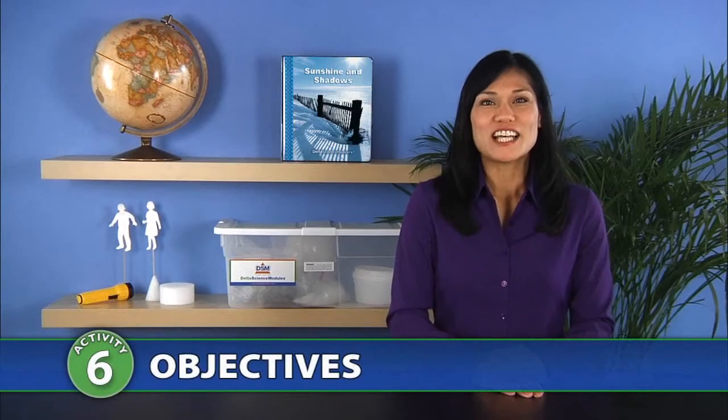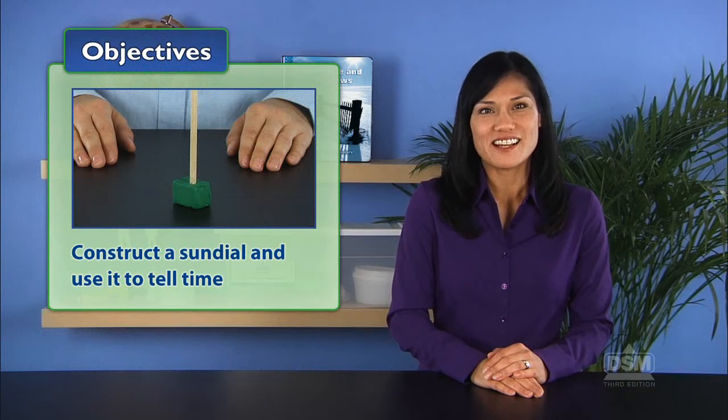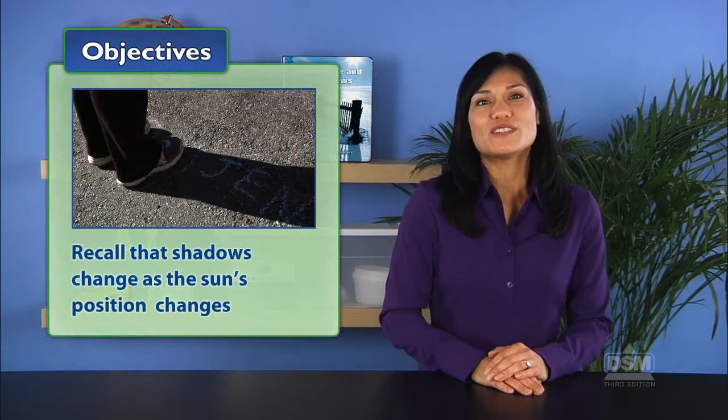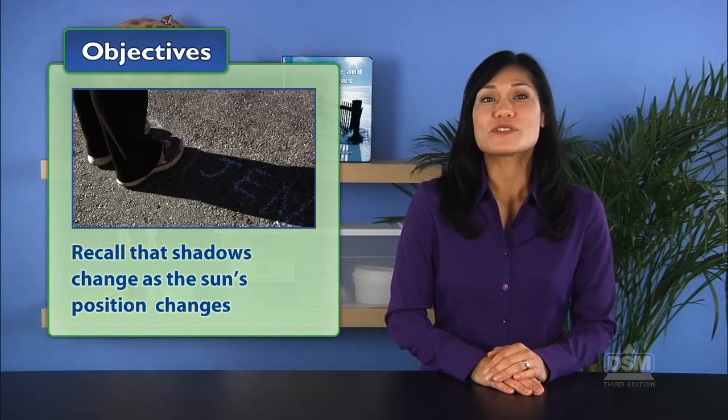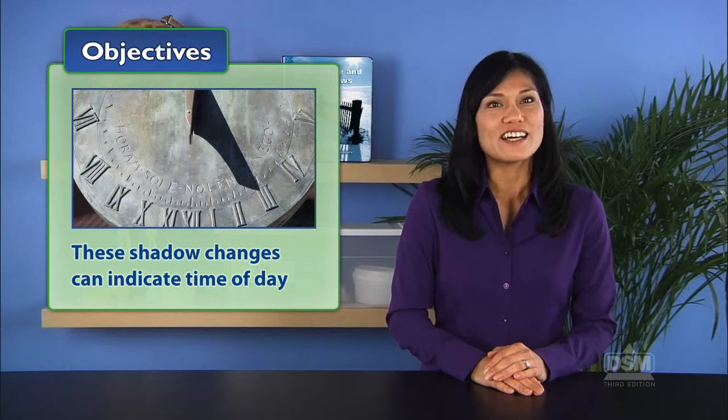In Activity 6, a shadow clock, students construct a sundial and use it to tell time. Students recall that shadows change as the sun's position in the sky changes, and that these shadow changes can indicate time of day.